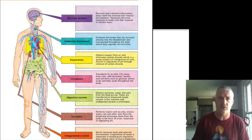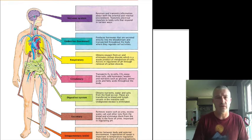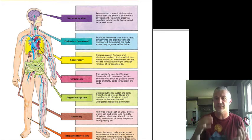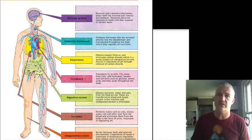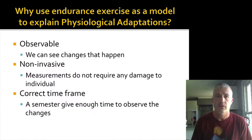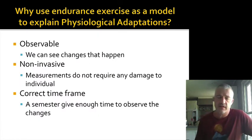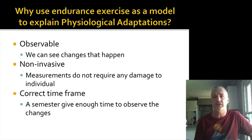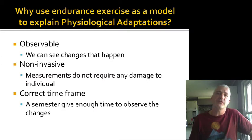This is part of the reason A&P is required before this course — we're going to talk a good amount about how the circulatory system, respiratory system, integumentary system, and others respond to stressors. One of the things I'm doing in this course is tailoring it around the idea of endurance exercise, for a number of different reasons.